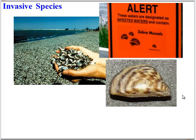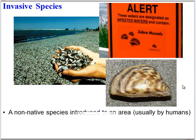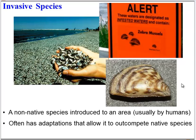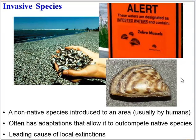We'll end the video by talking about invasive species. These are species that have invaded an area — they're not native, and they're usually brought to the area by humans. Oftentimes these species have adaptations that allow them to outcompete native species, which can lead to a lot of local extinctions. In class, we'll take a look at several examples of invasive species and their effect on ecosystem dynamics.